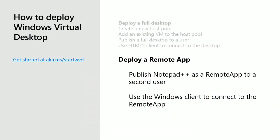Now for our second demo: deploying a remote app. You just saw how to deploy a full desktop experience using the HTML5 client. Now we're going to publish Notepad++—the application I installed inside my VM—and offer it as a remote app, so you only see the output of the application itself. Instead of the HTML5 client, we're going to use the Windows client, which has the best integration with the operating system.